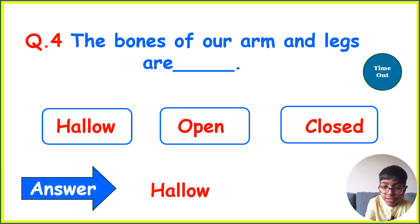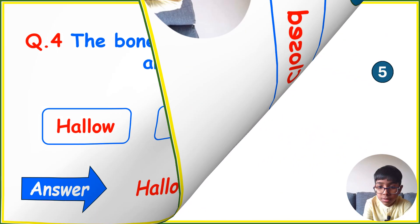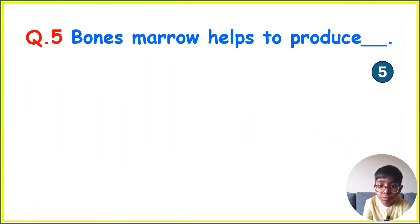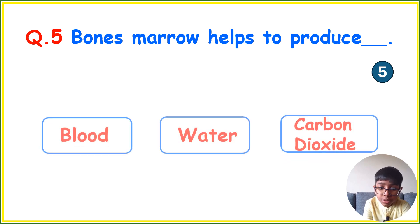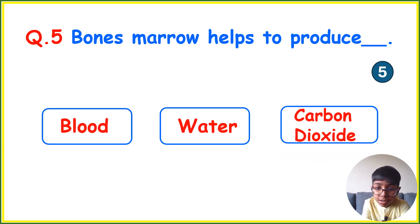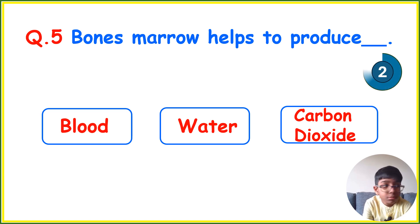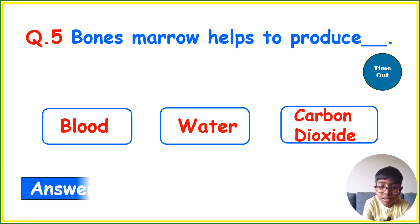Your next question is: Bone marrow helps to produce — Blood, Water, or Carbon Dioxide? Your time starts now. Your correct answer is Blood.